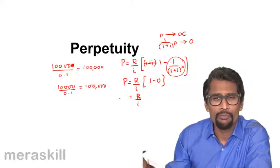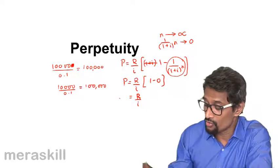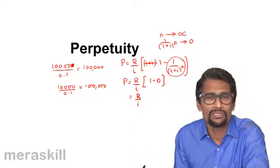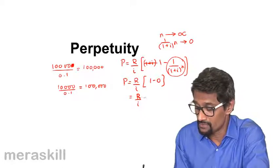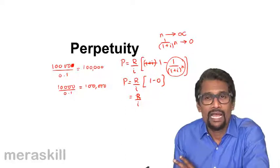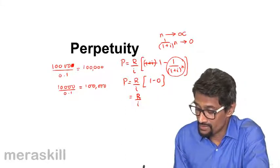This is perpetuity, and it's typically used for pensions. A fixed amount of pension is given; some amount of your money is put in the bank, hence the annual amount keeps coming to you on a regular basis.